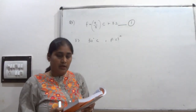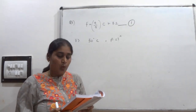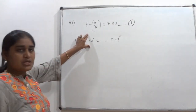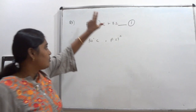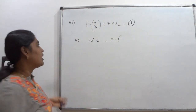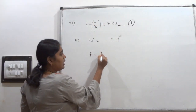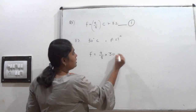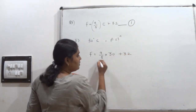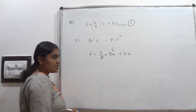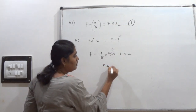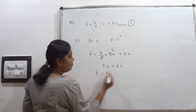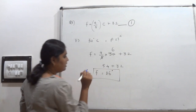Second part: if the temperature is 30 degree Celsius, what is the temperature in Fahrenheit? Celsius is given, so using the formula: F equals 9 upon 5 into 30 plus 32. 5 and 30 cancel giving 6, so 9 into 6 is 54, plus 32 gives 86. Fahrenheit is 86 degrees.